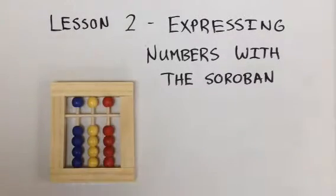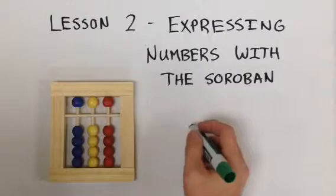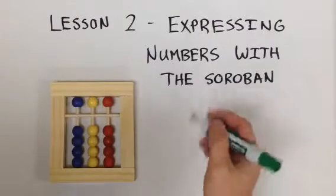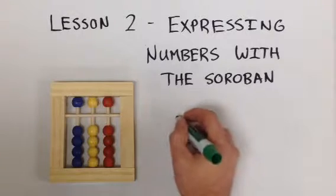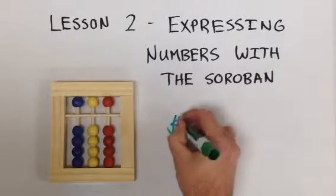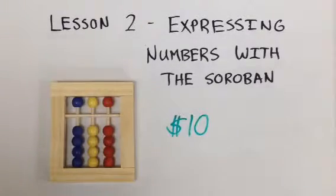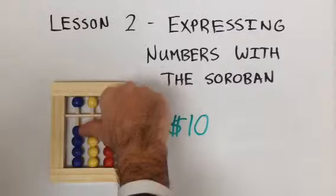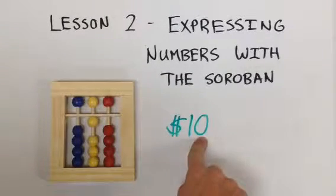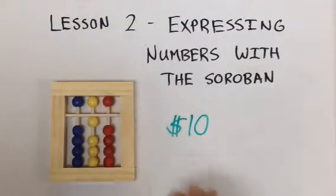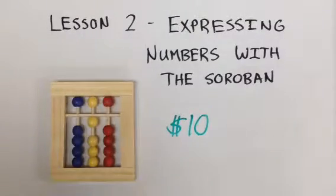Let's now think about the 10s column. How would we express, if we were a merchant in the market and someone came to us and gave us $10, how would we express this with our abacus? We take our thumb and move up one lower yellow bead. There are 0 in the units or 1s, so we don't do anything with the red column. This shows us the number 10.